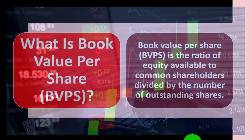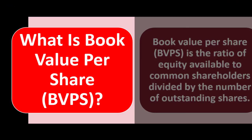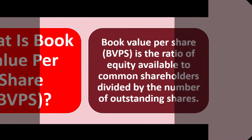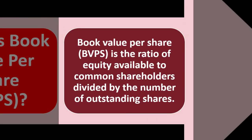Keeping that in mind, what is book value per share, BVPS? Book value per share is the ratio of equity available to common shareholders divided by the number of outstanding shares.